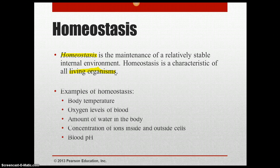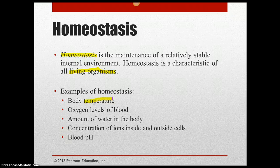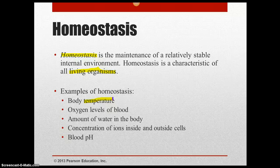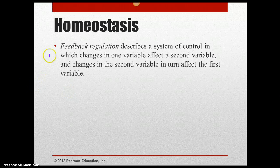Some examples of homeostasis include our body temperature, which stays close to about 98.6 degrees Fahrenheit. The oxygen levels of our blood — for instance, when we exercise we use more oxygen, so our body makes us breathe harder in order to take in more oxygen. A few more examples include the amount of water in our body, the concentration of ions inside and outside of ourselves, and our blood pH level.